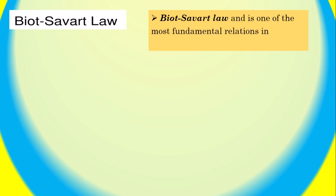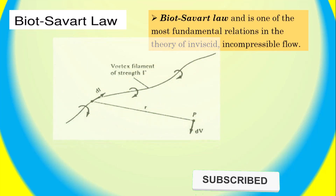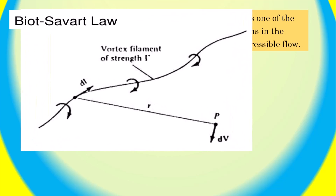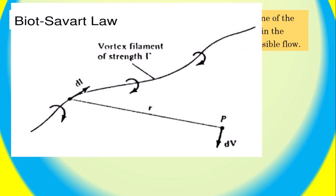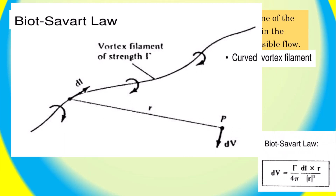The Biot-Savart law is a fundamental principle in fluid dynamics that describes the velocity field caused by a curved vortex filament. It states that the velocity field at a point is proportional to the strength of the vortex element, and inversely proportional to the distance between the point and the vortex element, and it is perpendicular to the plane containing the vortex element and the point. The Biot-Savart law is a mathematical formula that describes the strength and direction of the vortex filament at a given point, and can be used to calculate the velocity and pressure of a fluid flow and to predict the behavior of vortices in fluids.